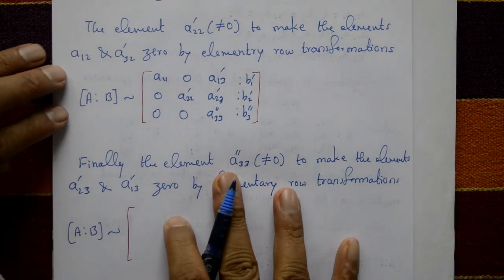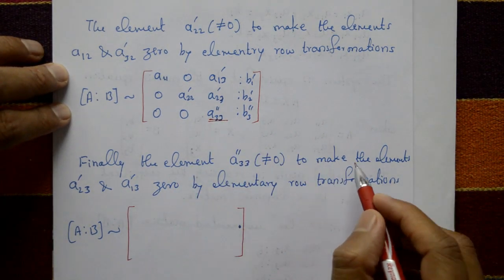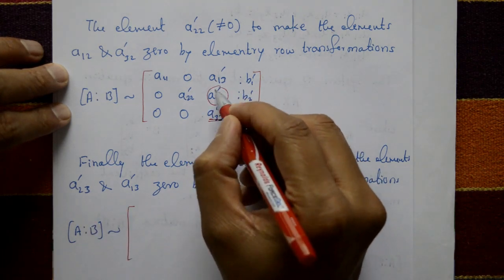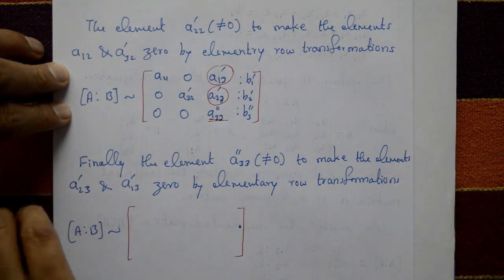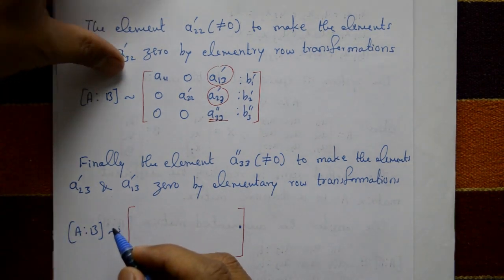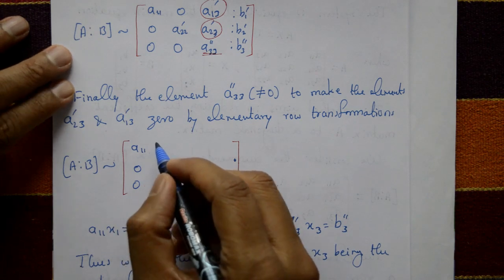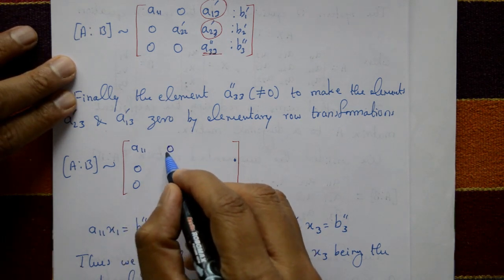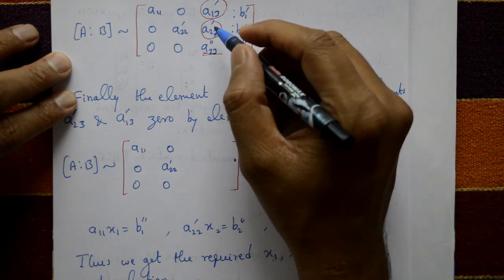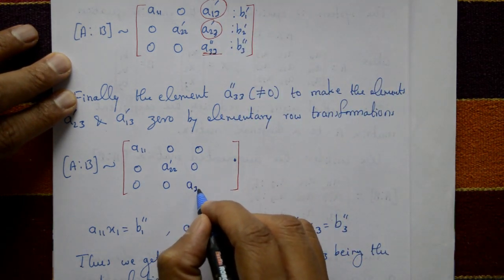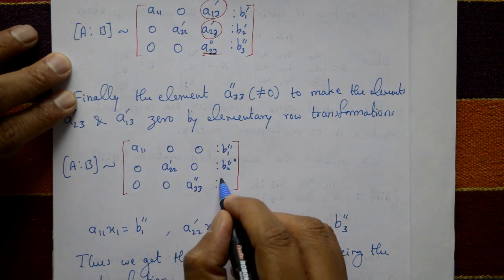The final step: element a33'' must not be equal to zero. We make elements a23'' and a13'' equal to zero using elementary row transformations. The resulting augmented matrix has first column [a11, 0, 0], second column [0, a22', 0], and the diagonal element a33'', with updated right-hand side values b1''', b2''', b3'''.